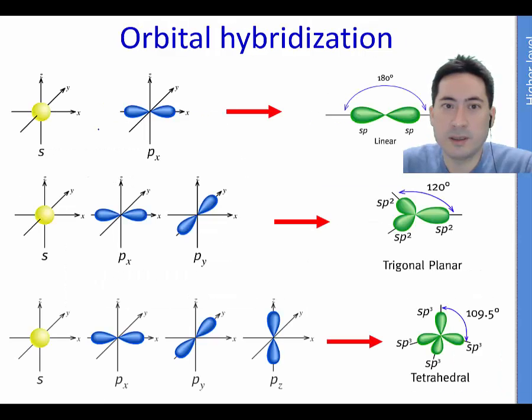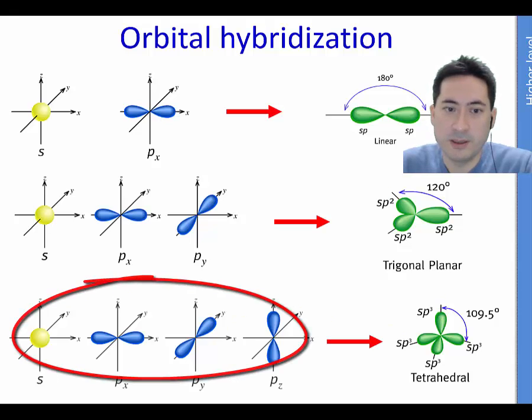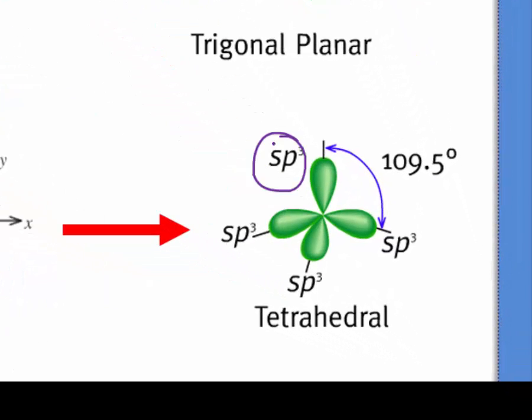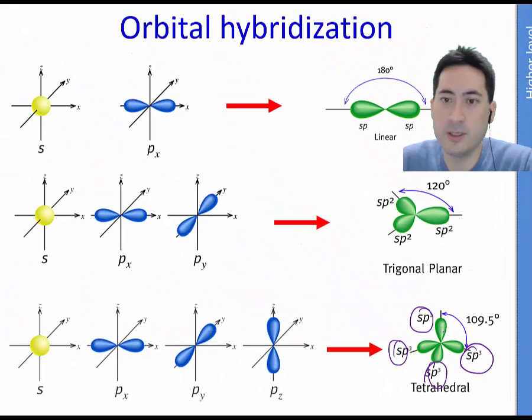So here we have a summary of how they work. For the tetrahedron you actually have these four things mixing. So 1s and 3ps form 4 sp3s and that forms the tetrahedron.